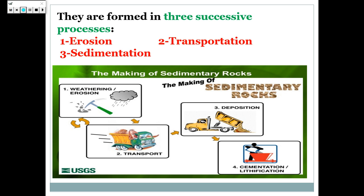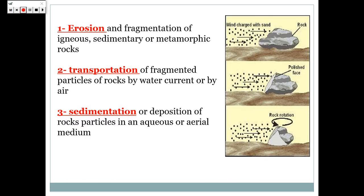How are sedimentary rocks formed? Sedimentary rocks are formed in three successive processes. Process 1: erosion and fragmentation of igneous, sedimentary, or metamorphic rocks. Process 2: transportation of fragmented particles of rocks by water current or by air. Process 3: sedimentation or deposition of rock particles in an aqueous or aerial medium.